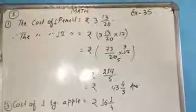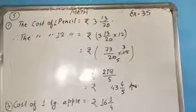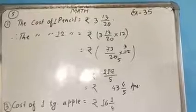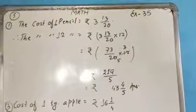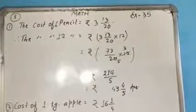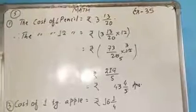Students, very simple question. The cost of one pencil is 3 and 13 by 20, so the cost of 12 pencils equals rupees 3 and 13 by 20 multiplied by 12. First we'll change the mixed fraction to improper form.